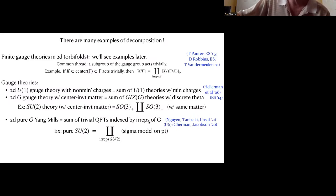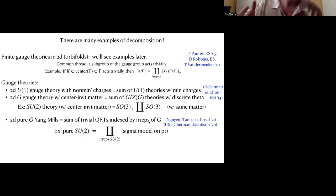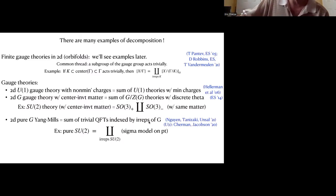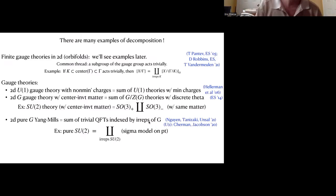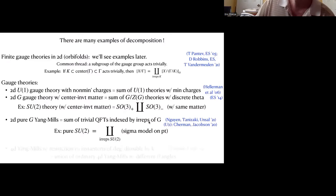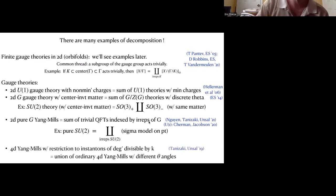For a more extreme example: two-dimensional pure Yang-Mills turns out to be a sum of trivial field theories, essentially invertible field theories, indexed by the irreducible representations of G. This was worked out relatively recently. For example, pure SU(2): on the one hand, I could take a pure SU(2) theory and decompose it into a pair of SO(3) theories, but the insight of these authors was that we can do something even more extreme and write a pure SU(2) Yang-Mills theory in two dimensions as a disjoint union of essentially sigma models on points, modulo counterterms.